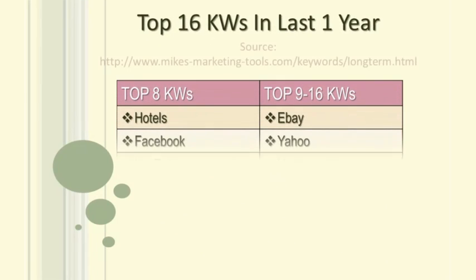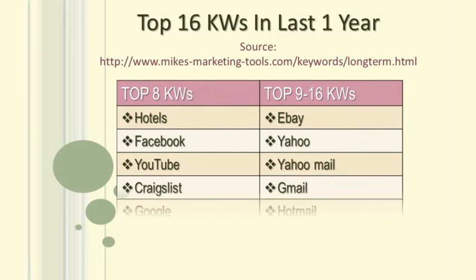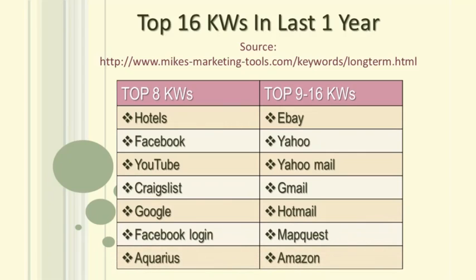Let me show you the top 16 most popular keywords in the last one year at the time of preparing this data. In fact, most of the top 500 to 1000 keywords are like the ones you see here. All these are navigational types.